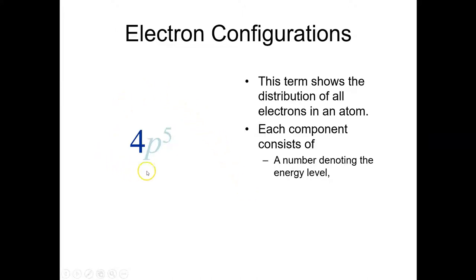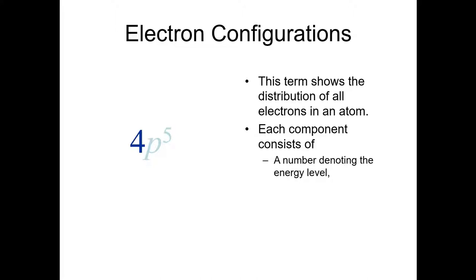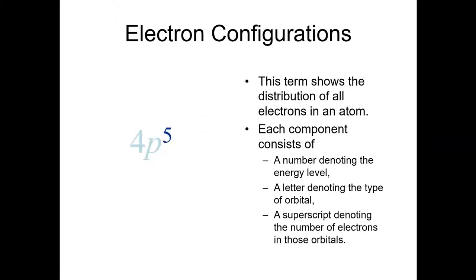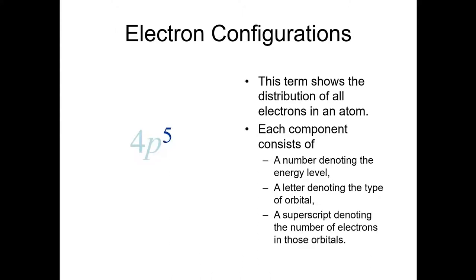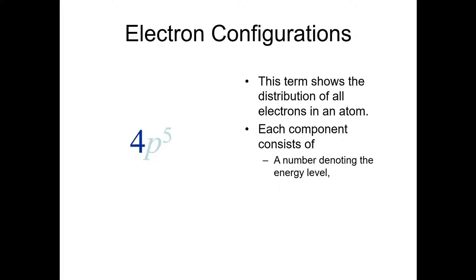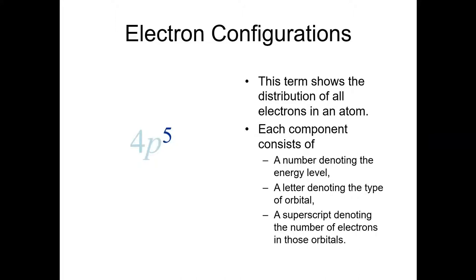Let's take the example of 4p5. The 4 in 4p5 tells you that this is at the principal energy level of 4. The p tells you what kind of subshell it is — it's the p subshell. And then the 5 tells you how many electrons are in that subshell. So 4p5 means all the electrons in the n=4, l=1 (p) subshell, and there are five of them.